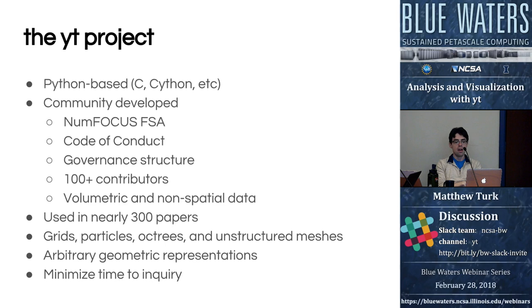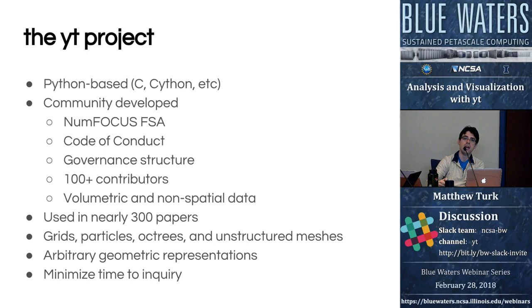The types of data that YT can natively represent and analyze include grids and Eulerian grids — for instance adaptive mesh refinement data, uniform grid data, particles or discrete data points. We have native support for octree data structures and, as of about a year or two ago, support for unstructured meshes including second-order unstructured meshes.